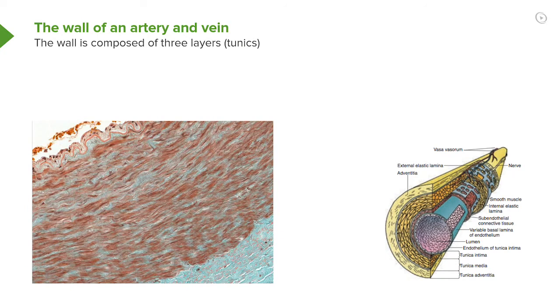It's stained to show a number of different components that I'll point out. On the top left-hand side of the section is the lumen of the blood vessel. You can only see a very tiny bit of clear part of this lumen.